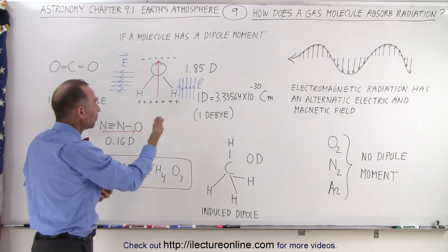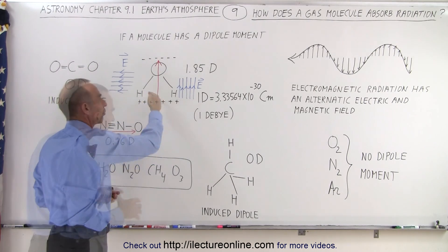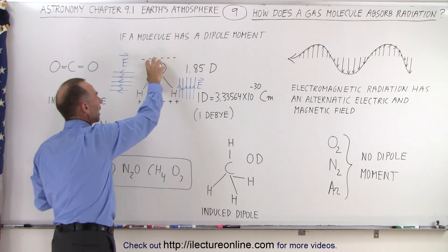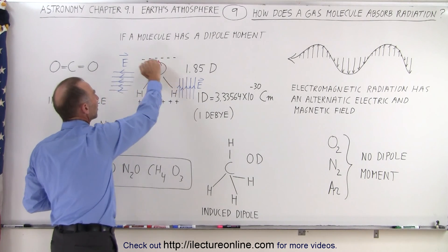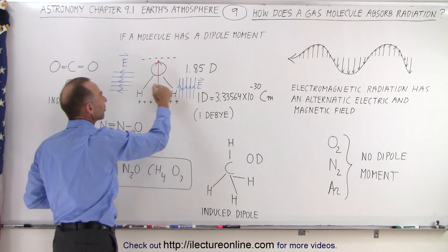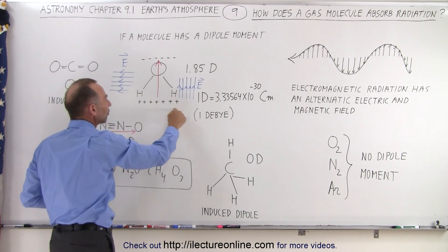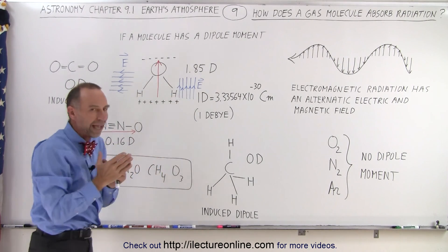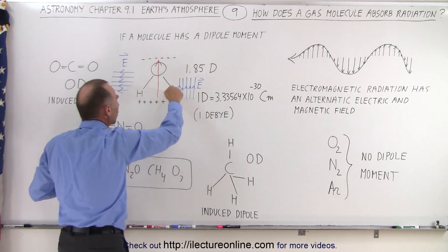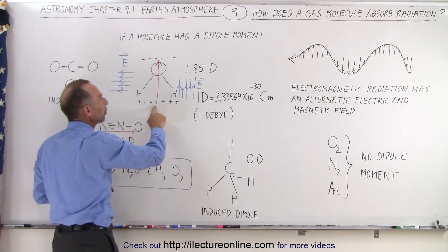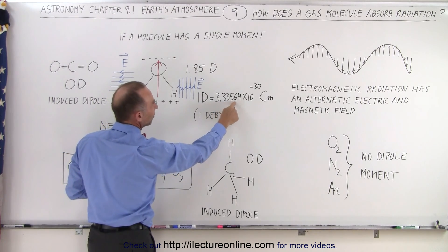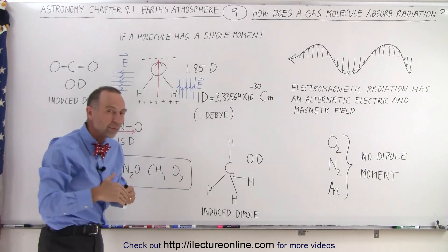Typically a molecule has a dipole moment when there's a separation of charges. For example, when we have a water molecule, on one end we have an oxygen atom, on the other end we have two hydrogen atoms. On the side with the oxygen atom the molecule tends to be more electronegative, and on the side with the two hydrogen atoms it tends to be more positive. So we have basically an electric field from the positive side to the negative side — that's the dipole moment. For a water molecule it's 1.85 Debyes, and the Debye is equal to 3.33564 × 10⁻³⁰ Coulomb·meters.